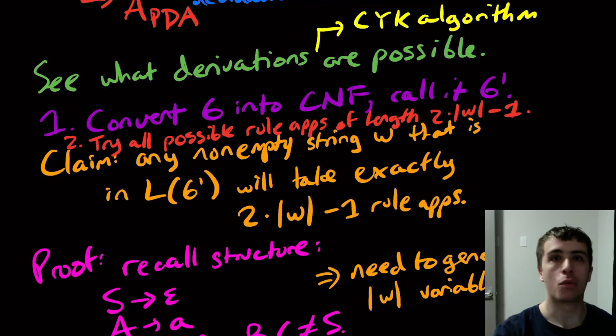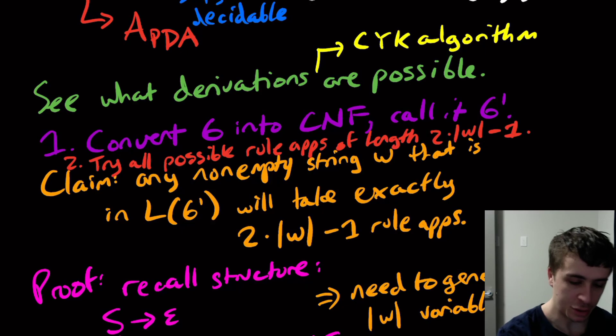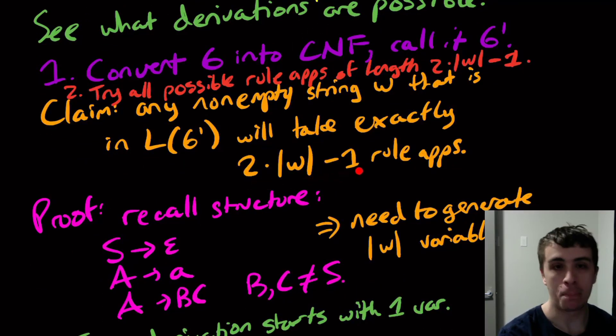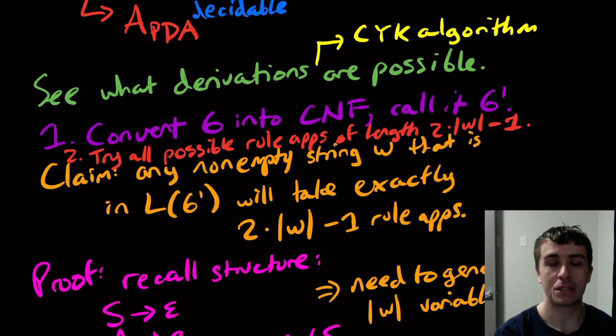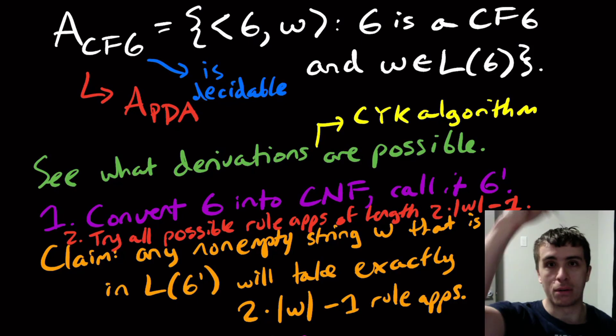So that was actually a really, really nice way of using Chomsky normal form in a very clever way. There are other ways of doing it, like with Greibach normal form and other normal forms. But this is the one that's actually taught most often. And it's actually really, really simple because we know what Chomsky normal form is, and it's a nice property of how the strings are actually generated. So hopefully that was interesting.